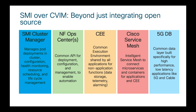The fourth pillar is the Cisco Service Mesh, which is an intelligent service mesh to connect microservices and containers for applications and steer traffic between containers. The fifth pillar is the 5G Database, which is the common database layer built for high performance and low latency, especially for applications like 5G and cable. Now we move to Jay to cover the CVIM part.